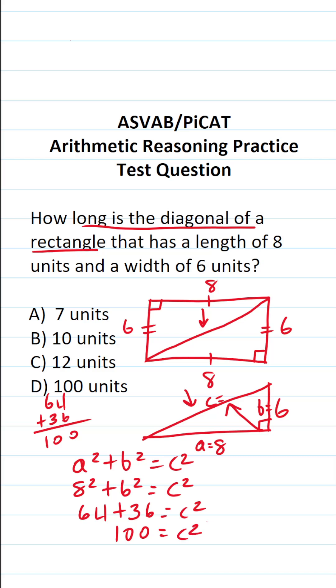We want C, not C squared. So to get rid of this square, we're going to take the square root of both sides of this equation. This crosses out, this says C is going to be equal to the square root of 100, which is 10.